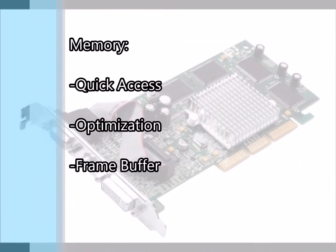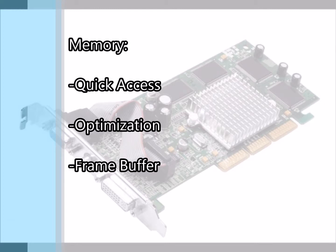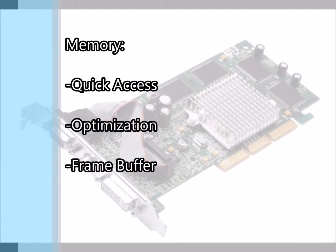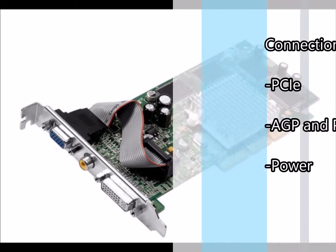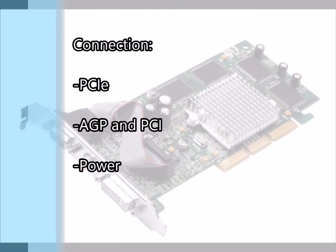Next, let's take a look at the memory. Like system memory found on motherboards, it holds information for quick access, but it is optimized for use with graphics. Memory on graphics cards holds information on each pixel, like its color and placement. Graphics card memory is also able to store completed images temporarily, as part of the memory can act as a frame buffer.